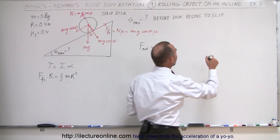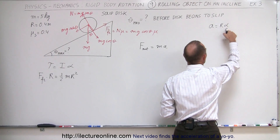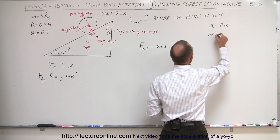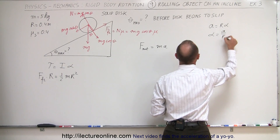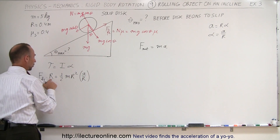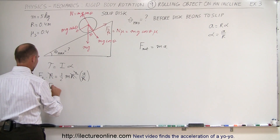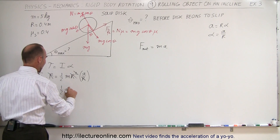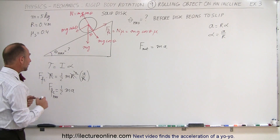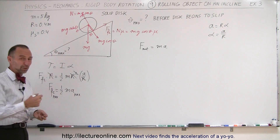So we have: friction force times r equals one-half mr squared times alpha. The angular acceleration alpha relates to linear acceleration a by alpha equals a divided by r. Substituting, the r's cancel out, leaving us with friction force equals one-half ma. Therefore the maximum friction force that can be applied to the rotating disk equals one-half m times the maximum acceleration.